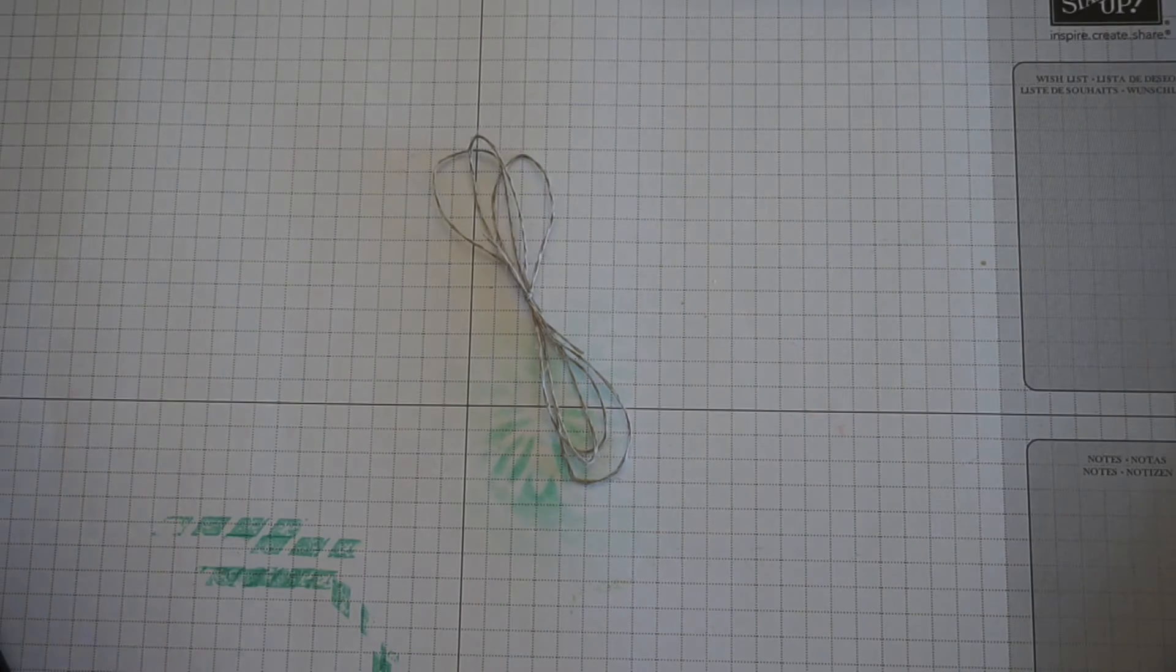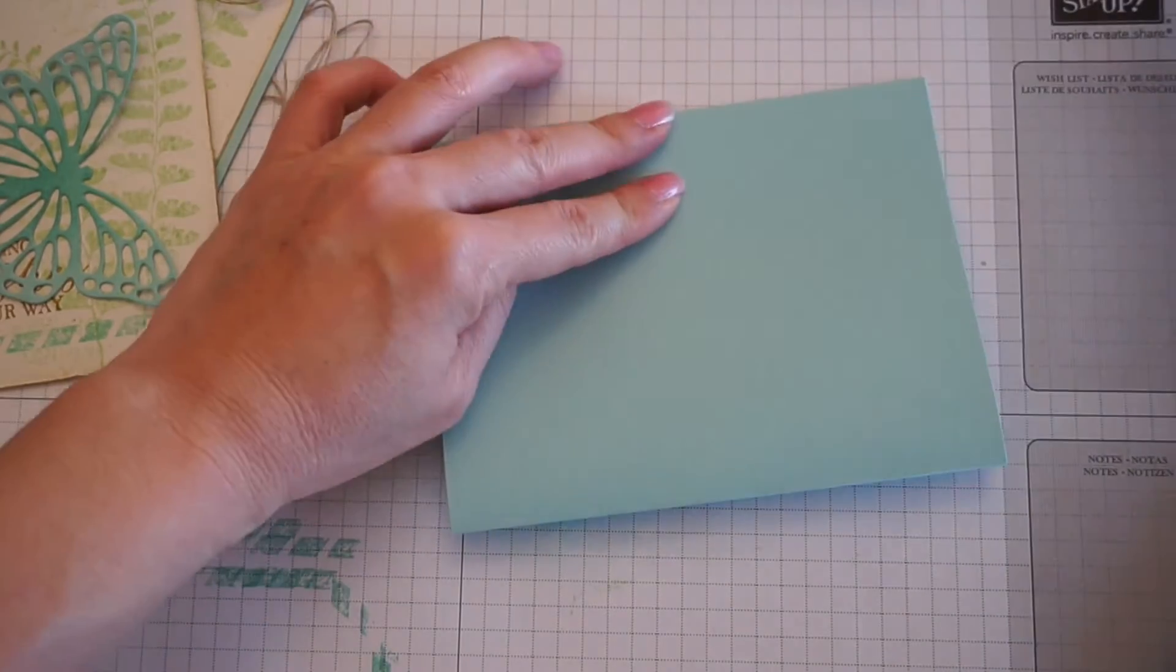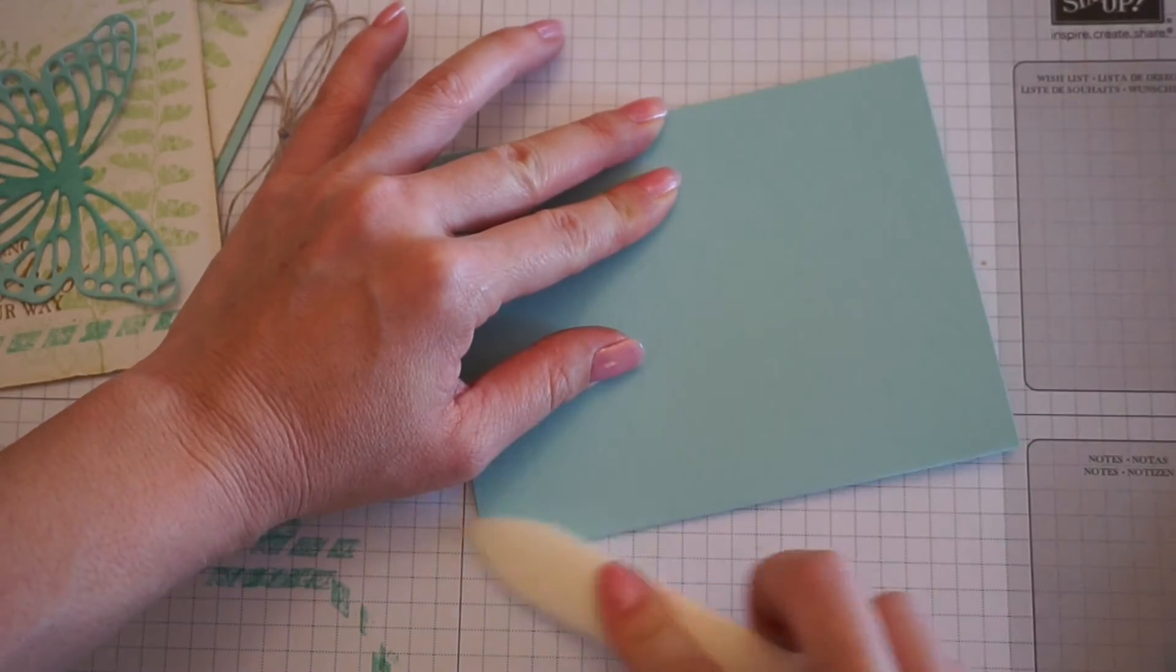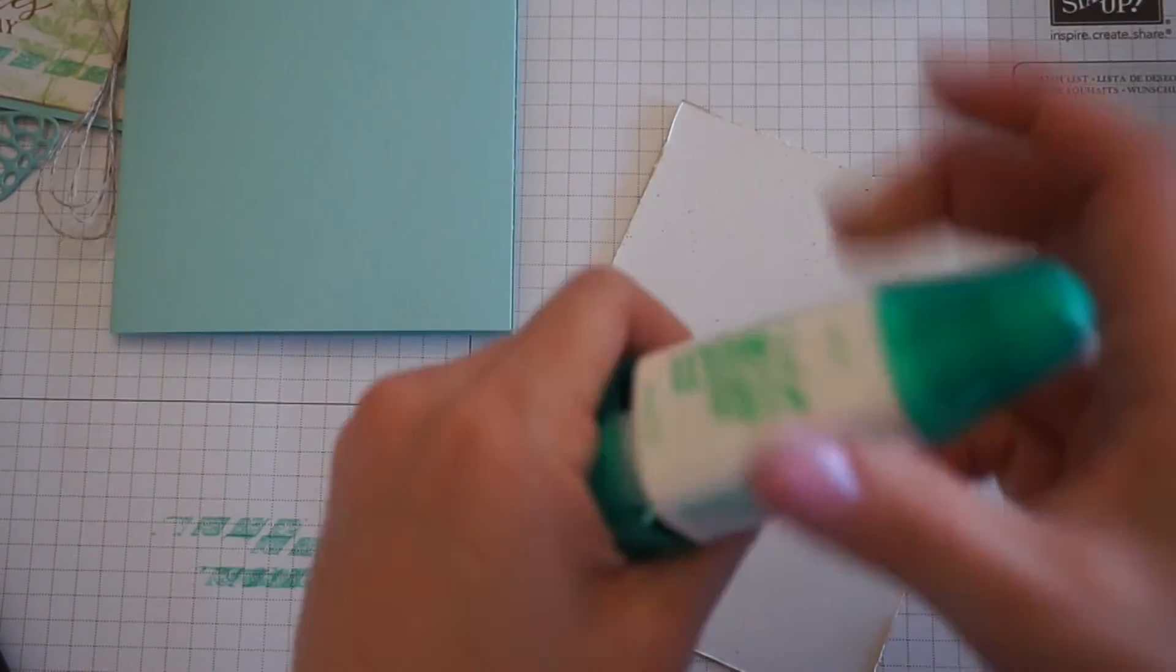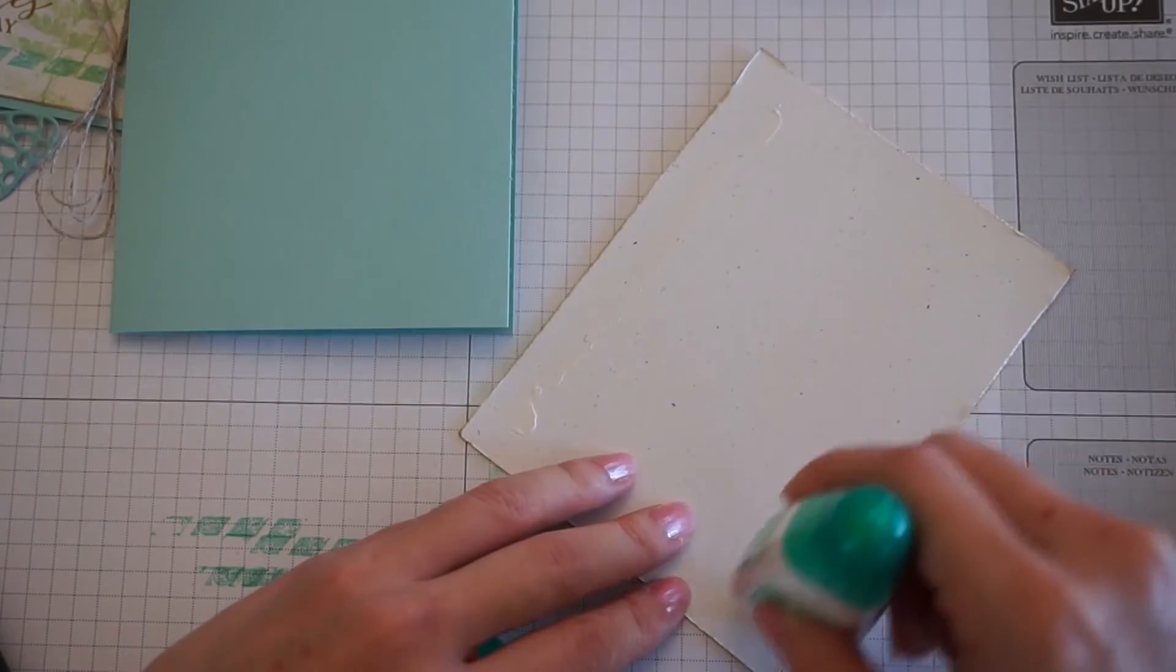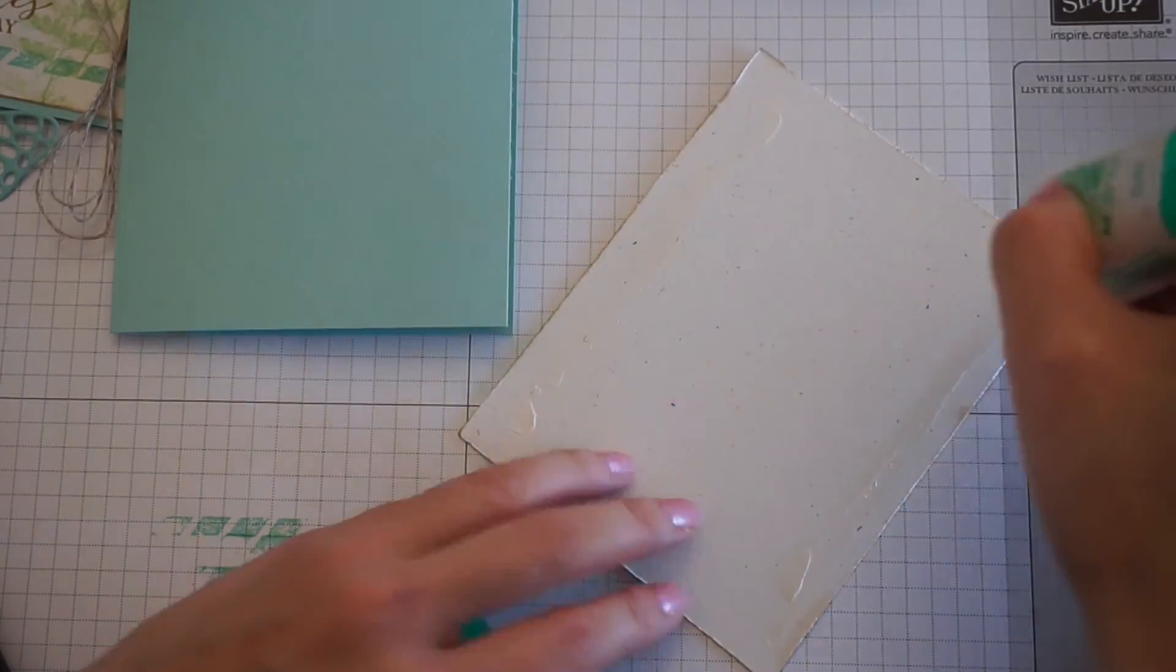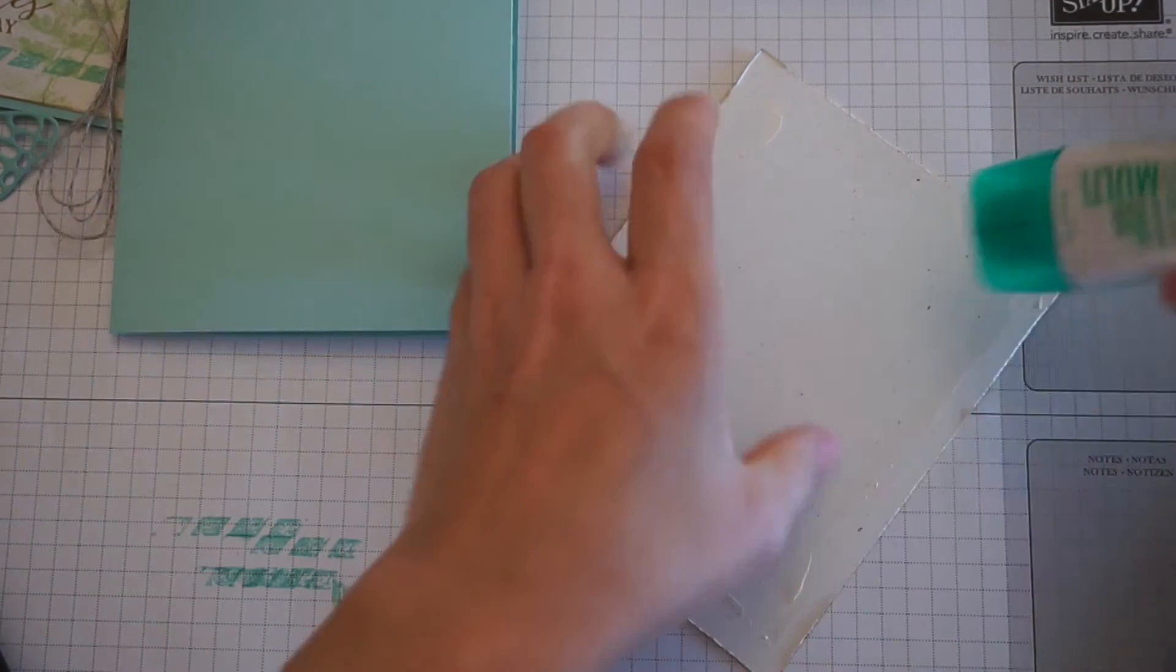You can put it all together. You want to fold your cardstock in half at the score line and you want to glue or you can use your snail adhesive, your tape runner. I just prefer the glue.